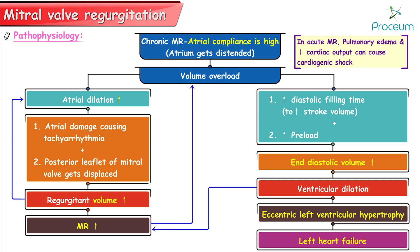In acute mitral regurgitation, flash pulmonary edema and decreased cardiac output can cause cardiogenic shock.